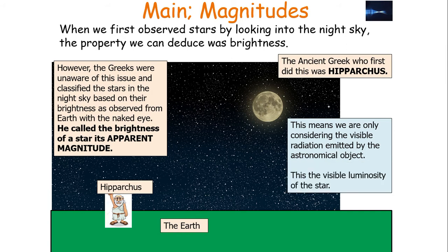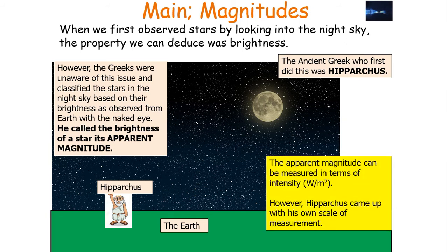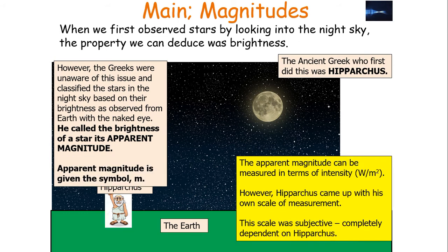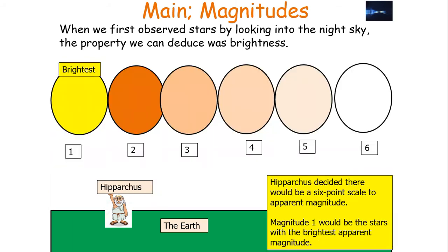The apparent magnitude represents the visible luminosity of the star, which is important when using optical telescopes. Because apparent magnitude is the effect of brightness to the observer, it is measured in terms of intensity in watts per metre squared. However, Hipparchus came up with his own scale before these units were established — it would take approximately 2,000 more years for that. Apparent magnitude is given the symbol small m, and Hipparchus's scale was entirely subjective, dependent on his own interpretation of brightness.